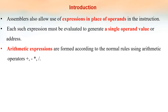In assembly language instructions, we know that it has three parts: labels, opcode, and operand. This operand is a value or an address, and this operand value can be an expression. That is, assemblers also allow use of expressions in place of operands.